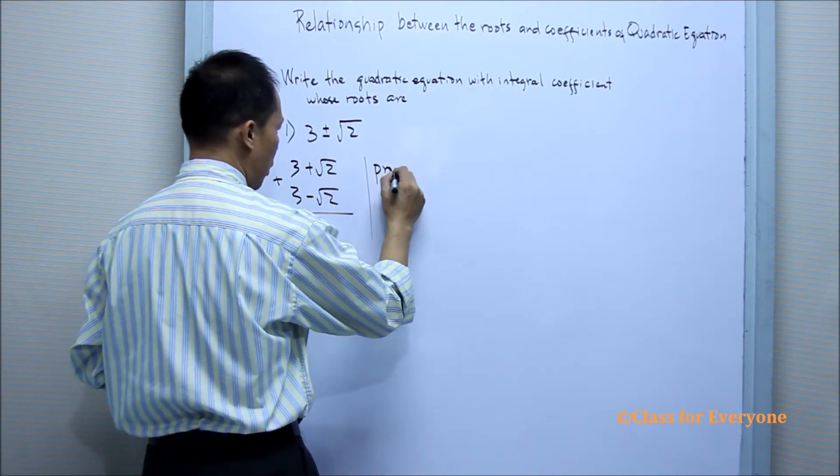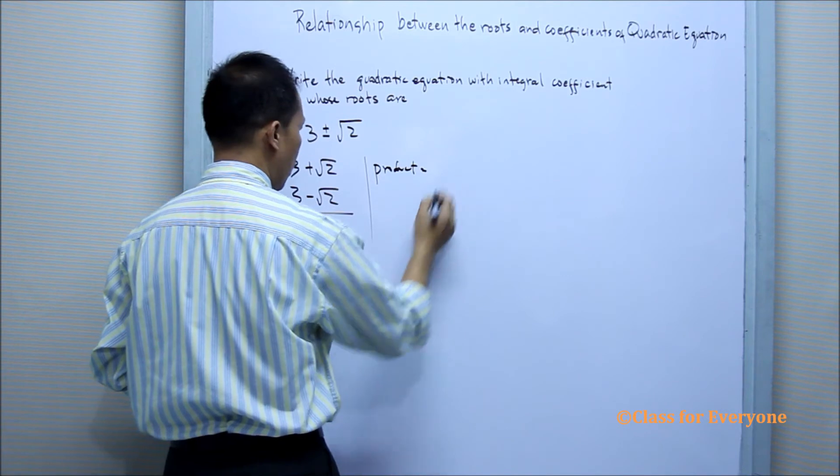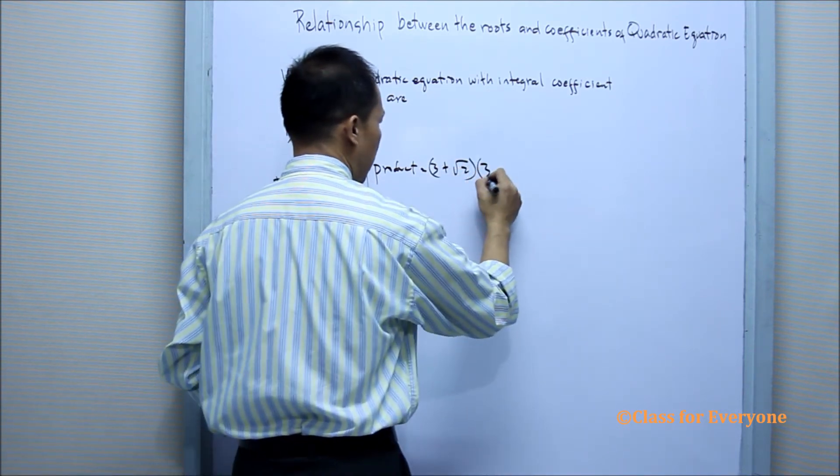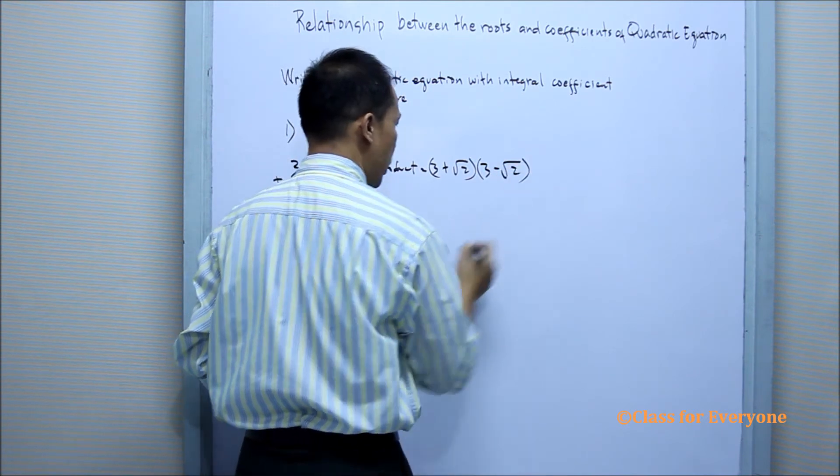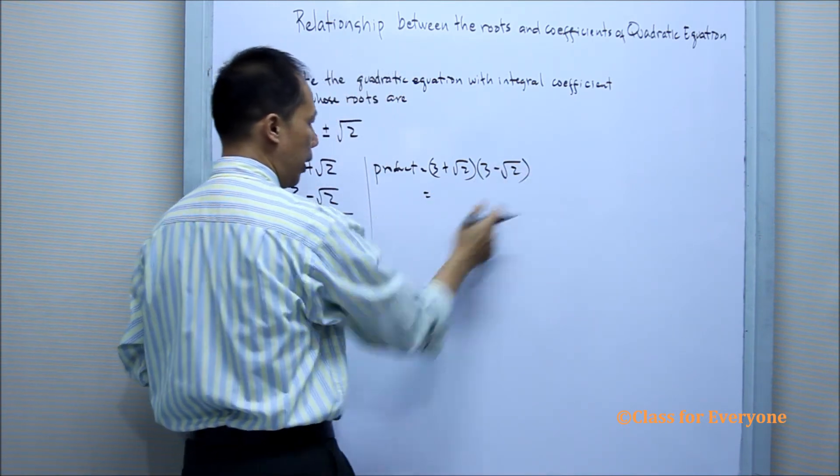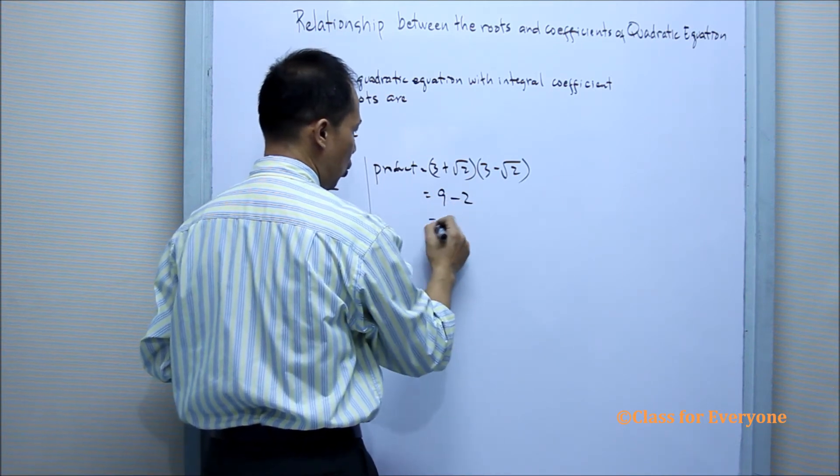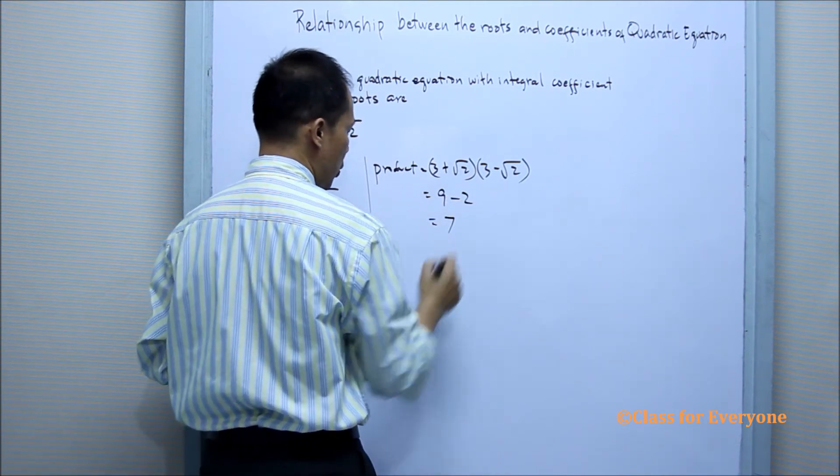the product will be equal to 3 plus the square root of 2 times 3 minus the square root of 2. Using the FOIL method, we have 9 minus 2, which is equal to 7.